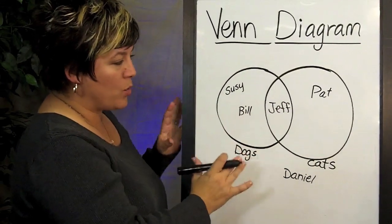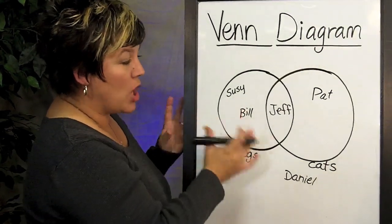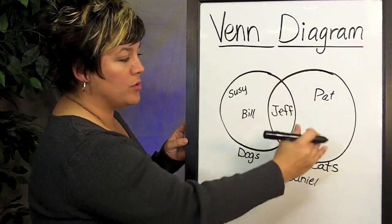So this is a very simple way to organize information. It's called a Venn Diagram, and this one has two circles.